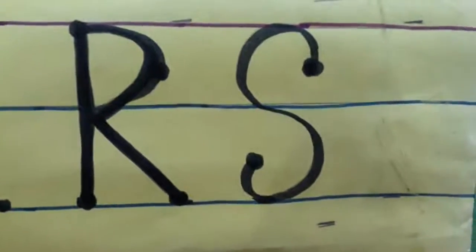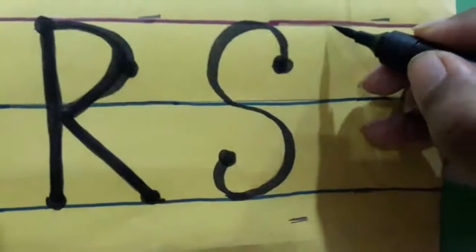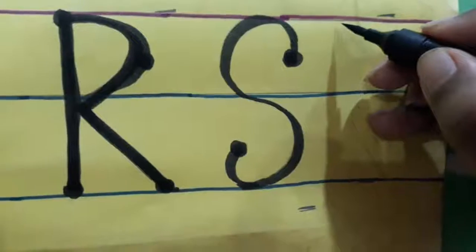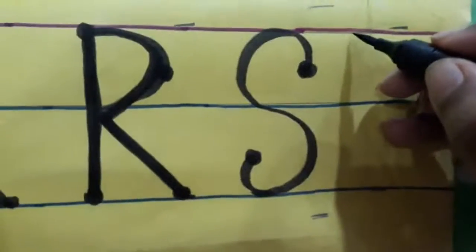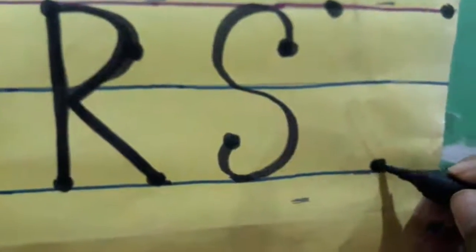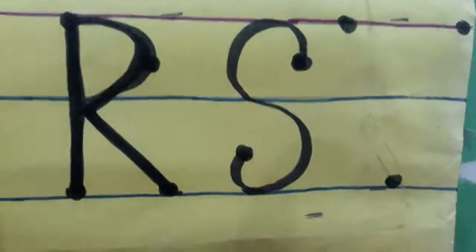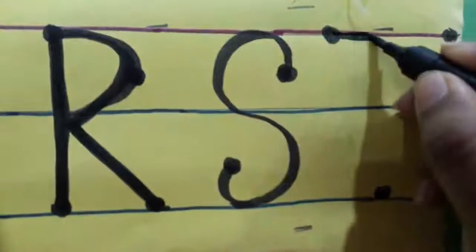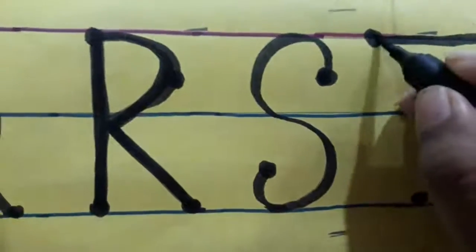So Q, R, S — now it's the turn of T. We will make T, and it is very easy to make T for tiger. We will put three dots. For T we will make a sleeping line and then a standing line. Sleeping, standing.